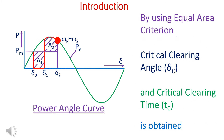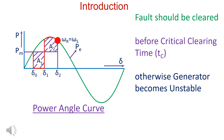By using the equal area criterion, the critical clearing time can be found. The fault should be cleared before the critical clearing time; otherwise the generator becomes unstable.